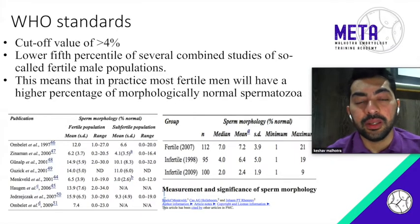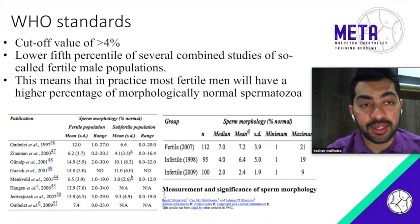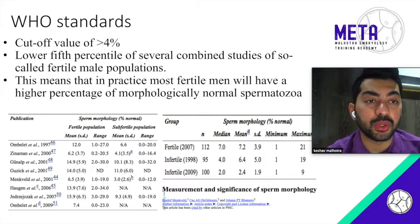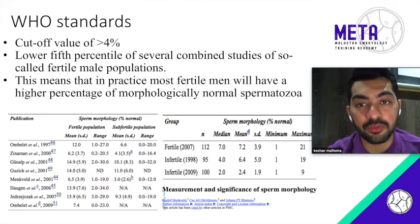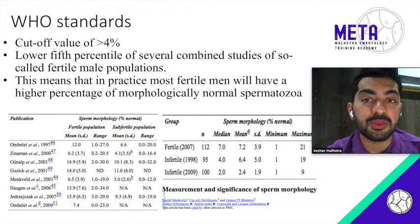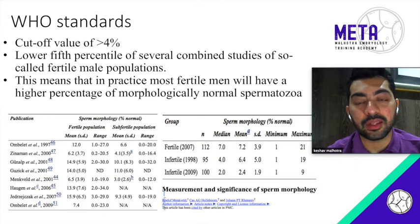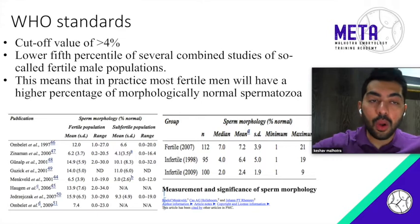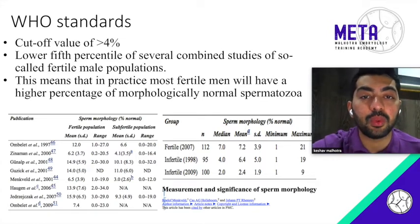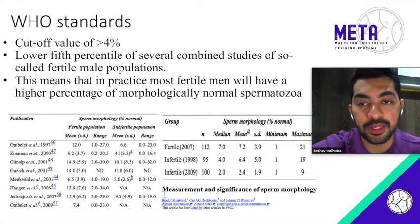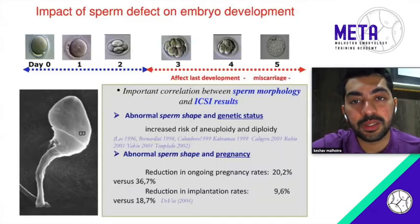We know that morphology is on the decline. The newer standards set by WHO in 2010 basically state that the cutoff for normal morphology is now more than 4%, so any sample which has more than 4% morphology is classified as normal. These are the lower fifth percentile of several combined studies of fertile men, where they found that men with morphology of less than 4% took a longer time conceiving compared to men with more than 4% — that's how they tabulated the morphology percentages.